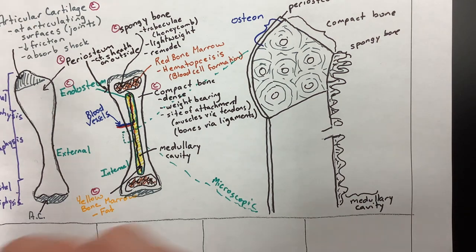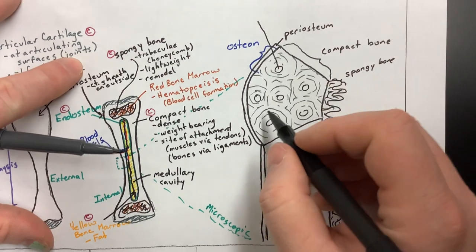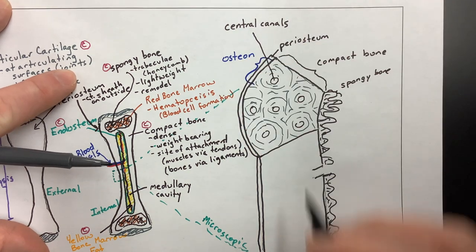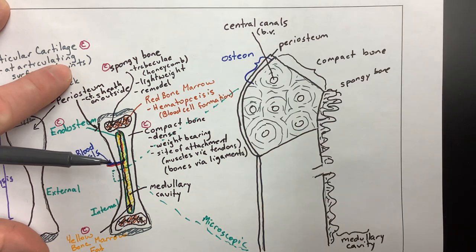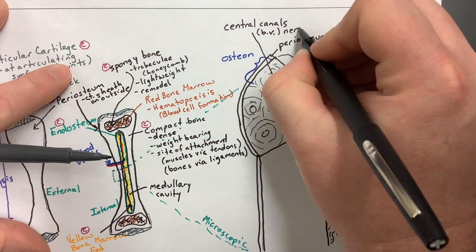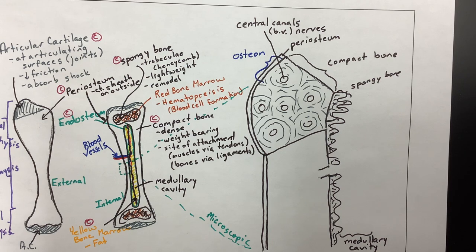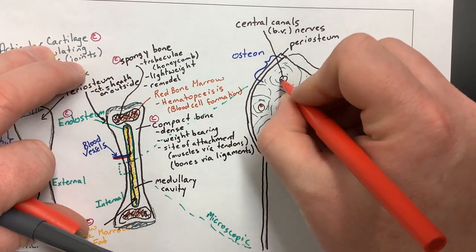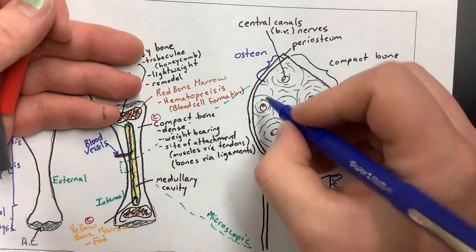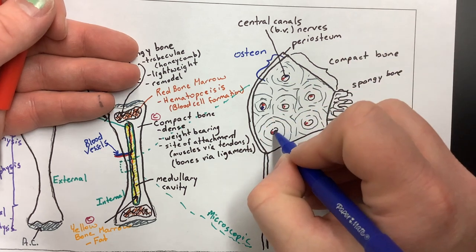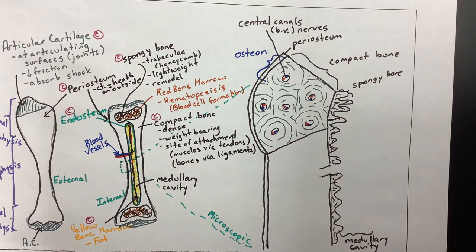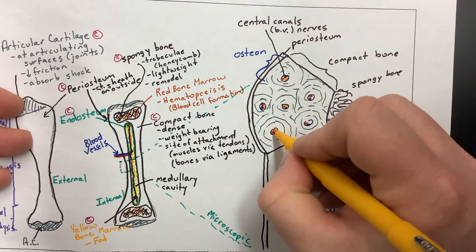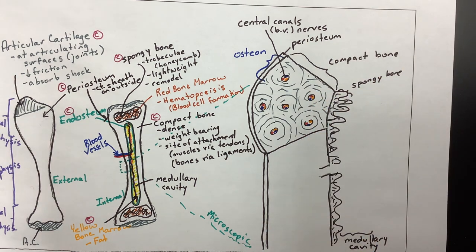Inside each central canal there are blood vessels — abbreviated BV — and nerves. Red arteries and blue veins are drawn into each central canal, along with nervous tissue shown in a yellowish color, all within each osteon.